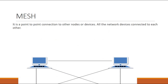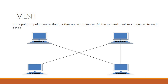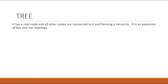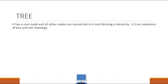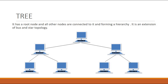Next is mesh topology. It is a point-to-point connection to other nodes or devices — all network nodes are connected to each other. Every node is connected to every other node, which is what we call mesh. Next is tree topology. Tree has a root node, and all other nodes are connected to it forming a hierarchy. It is essentially an extension of bus and star topology.